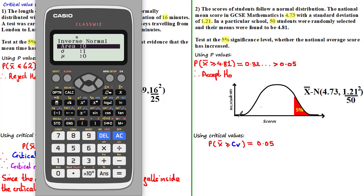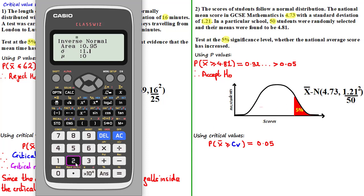So in order to get the correct critical value for this upper tail, we actually need to tell the calculator to read the first 95% of the data, and therefore we need a value of 0.95. For the standard deviation of the sampling distribution, we need to take the square root of this value, which is 1.21 divided by the square root of 50. And for the mean, we need to use the population mean, which is 4.73.